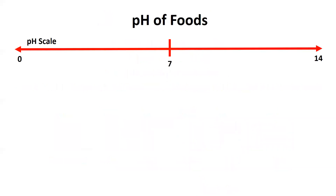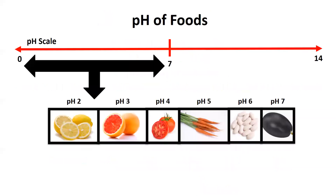The pH of most foods is below 7. There are only a few types of food that have a true neutral or basic pH. Those include canned black olives and hominy because they are lye-cured as part of their processing. Egg whites also have a slightly basic pH. However, pretty much everything else has a pH below 7.